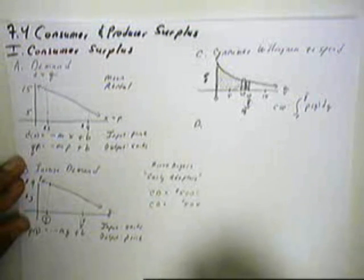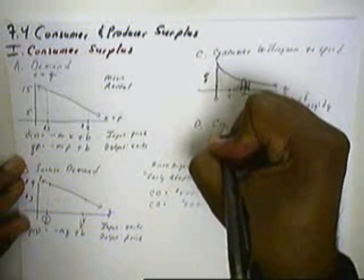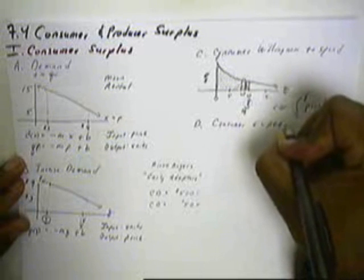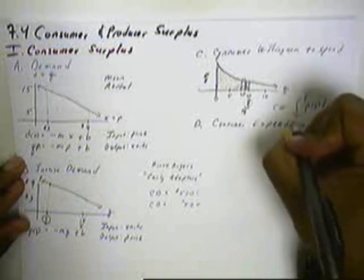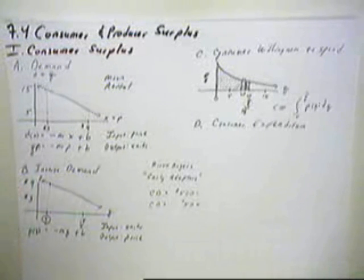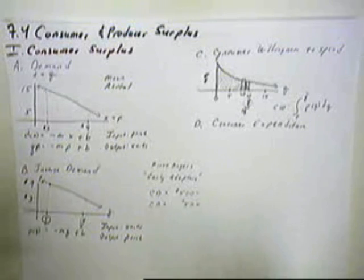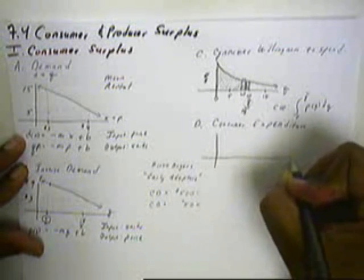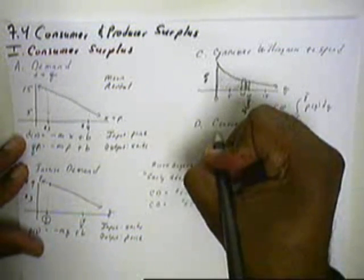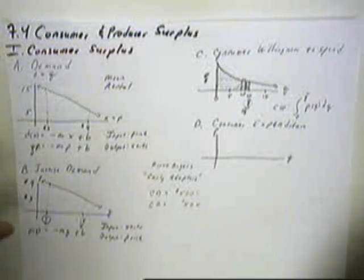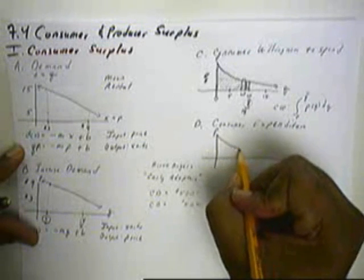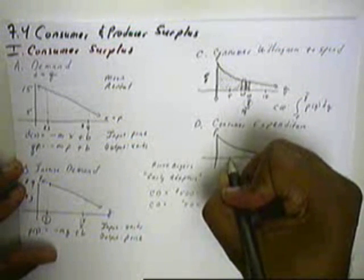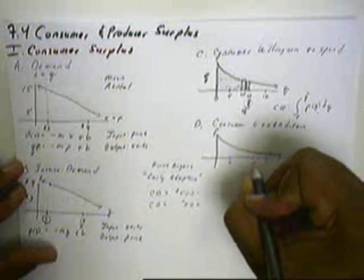Next, let's look at consumer expenditure. When we look at consumer expenditure, we're looking at how much right now is the consumer spending on our product. Let's take a look at that. Q for the demand and P for the price, and once again we'll develop the curve.